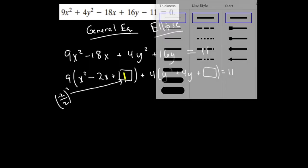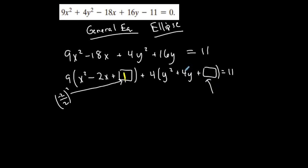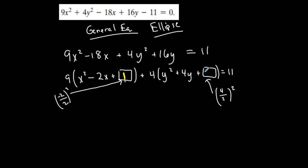Let's determine what goes into this box. Same thing: b in this case is 4 divided by 2 and squared, so b over 2 squared is 4. Be careful because I have an equation and I added stuff to the left hand side, and to keep it balanced I have to add the same stuff to the right.